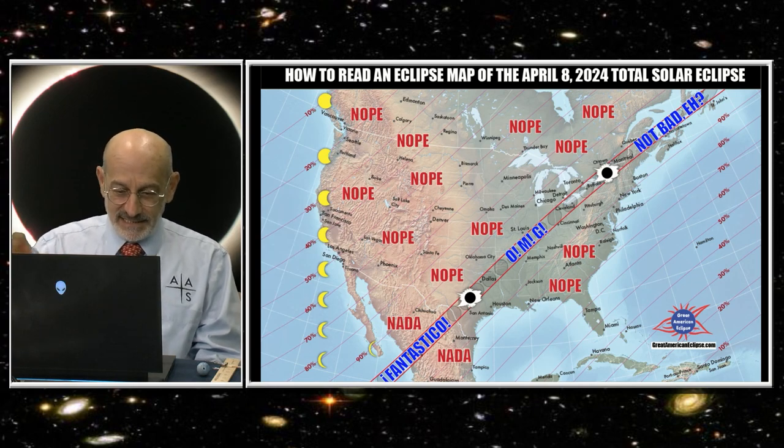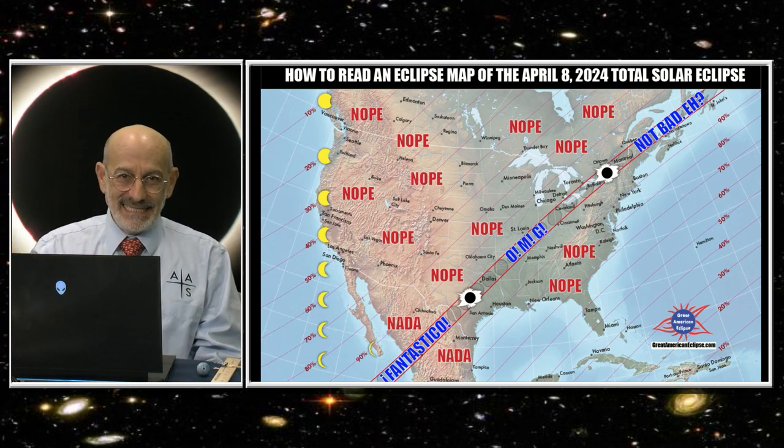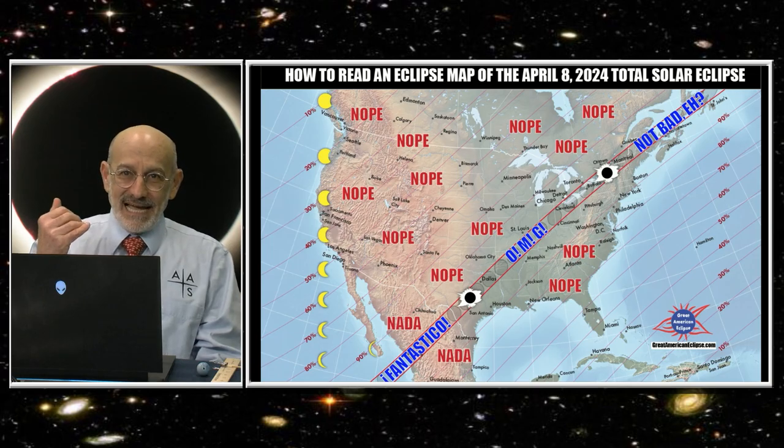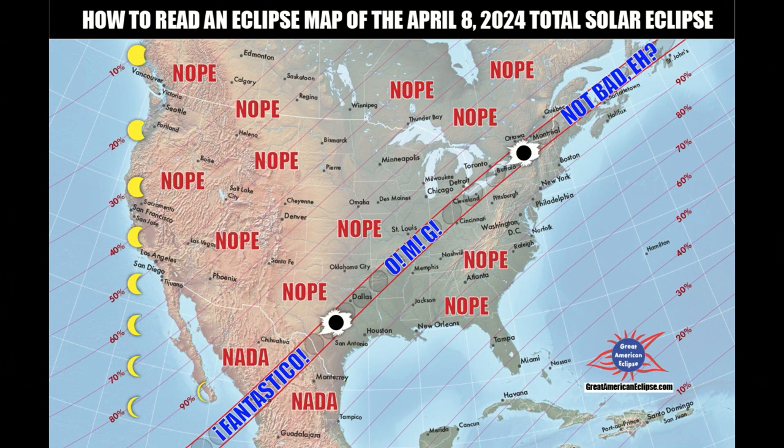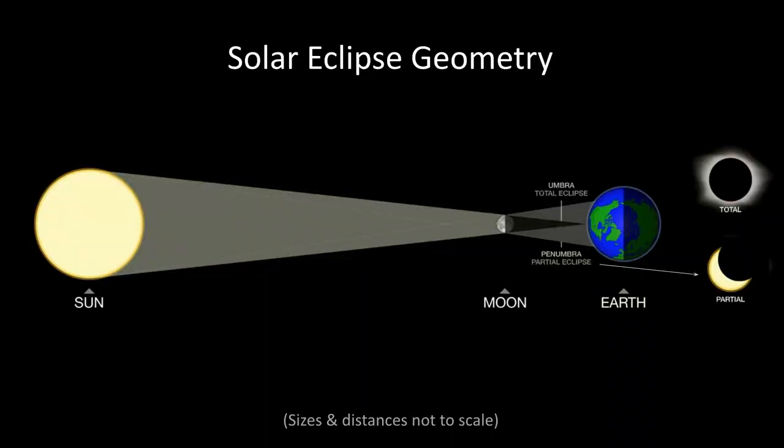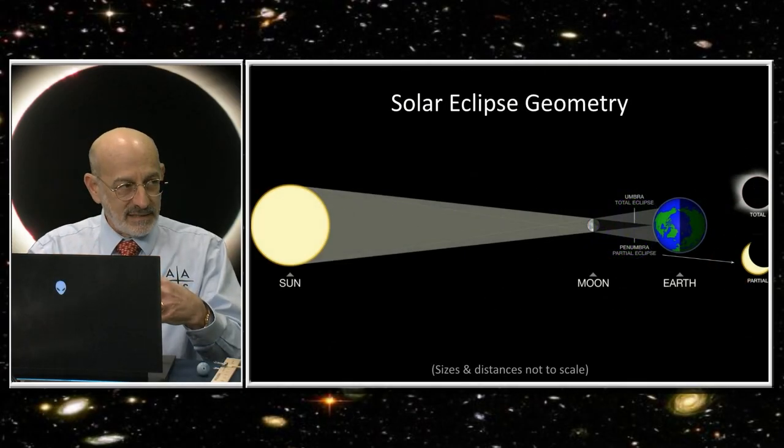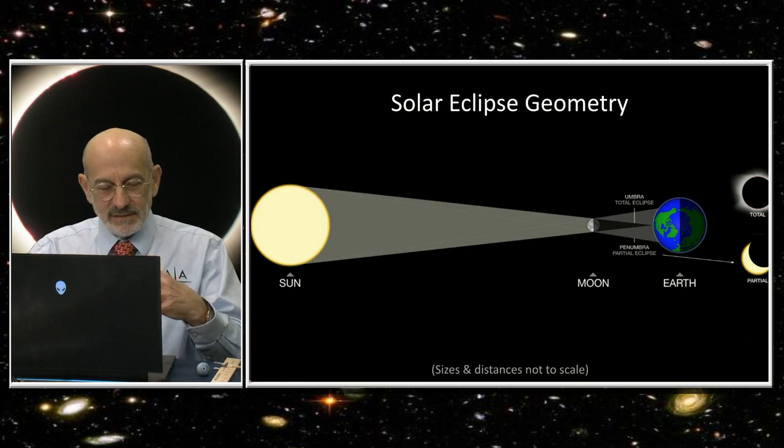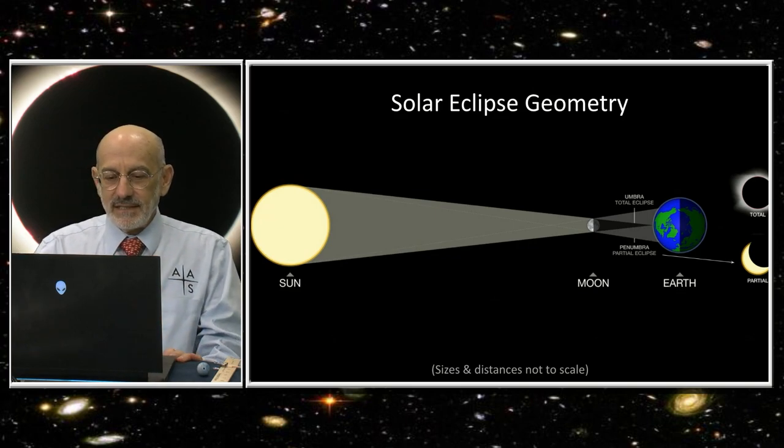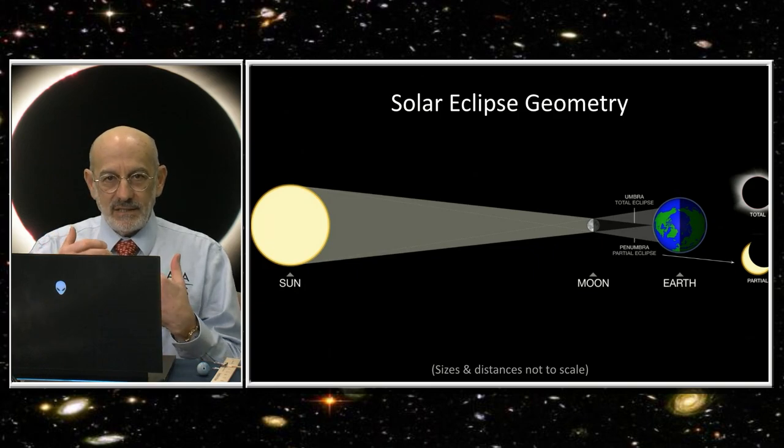If you are not within that path, you're only going to have a partial solar eclipse. Michael Zeiler of greatamericaneclipse.com created this map to indicate that outside the path, it's like close but no cigar. You have to be in the path to get the total eclipse.